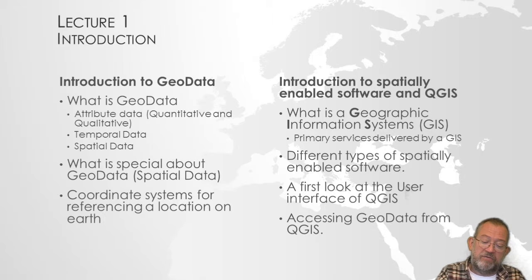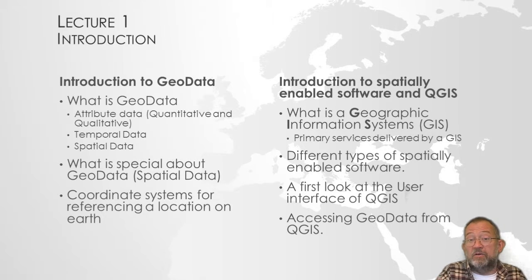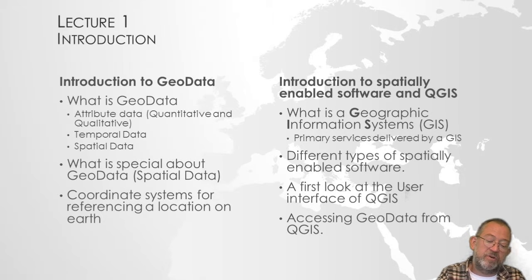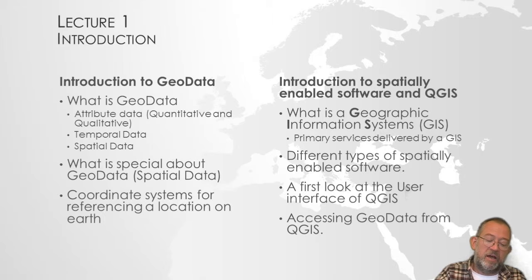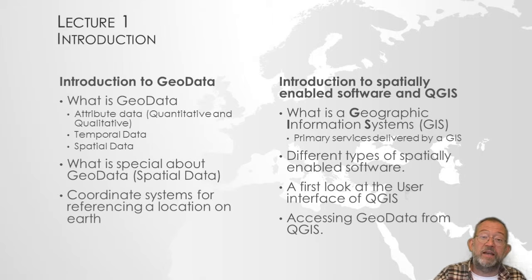We will talk about different types of what I have called spatially enabled software — software that can work with spatial data. Lots of software can do it; you will probably try Google Earth, but Excel can do it too. What categories are there, and how do you differentiate between different types of spatially enabled software? Then we will look at that special type of software that is purpose-built for working with spatial data, sometimes also called GIS. We will be using QGIS — what it is, how it works as a user interface, what we can do, and how we get data into QGIS.